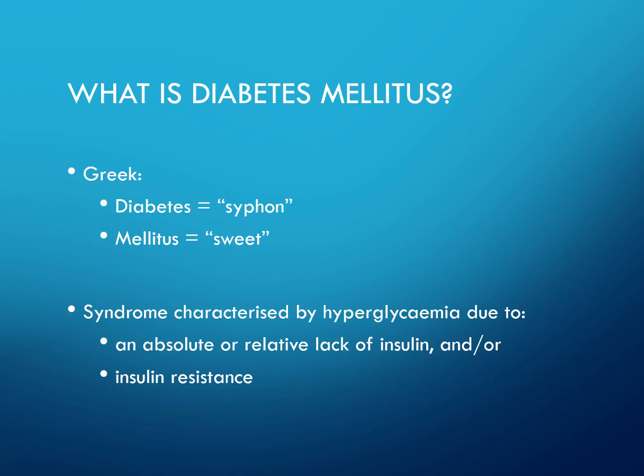So what is diabetes mellitus? 'Diabetes' means siphon and 'mellitus' means sweet. It is a syndrome characterised by hyperglycaemia due to an absolute or relative lack of insulin and/or insulin resistance.